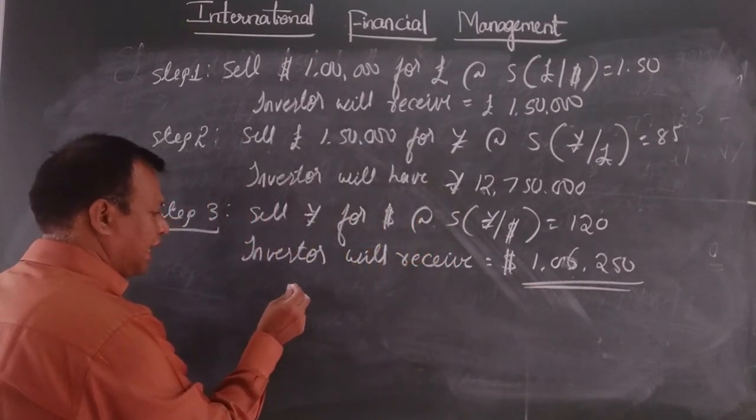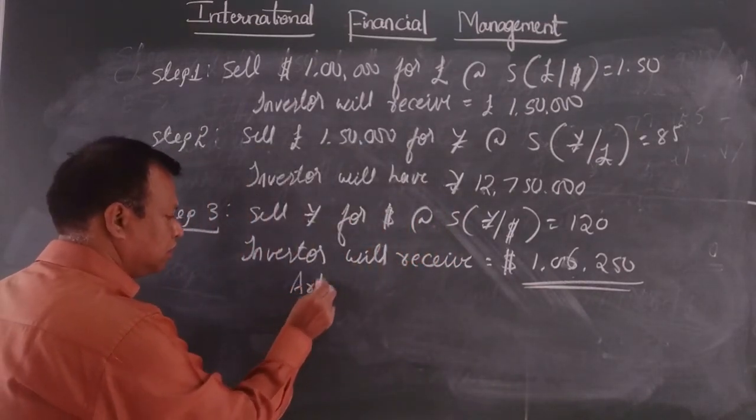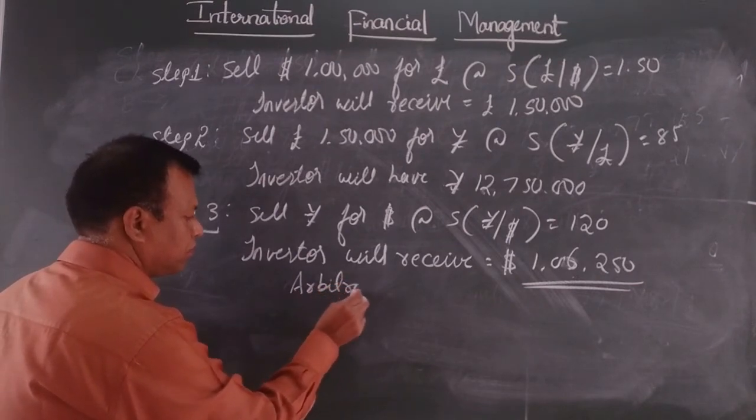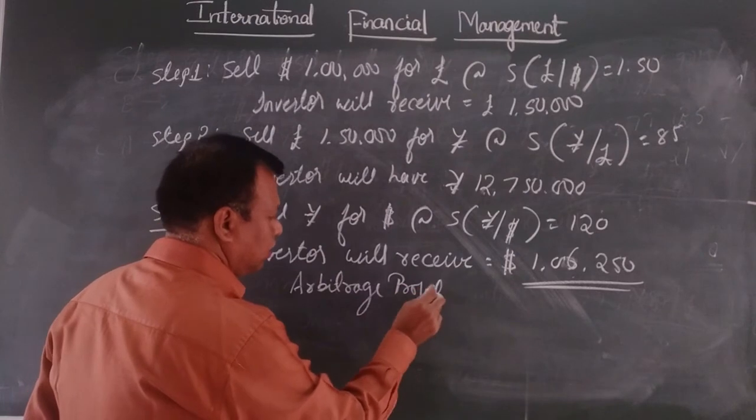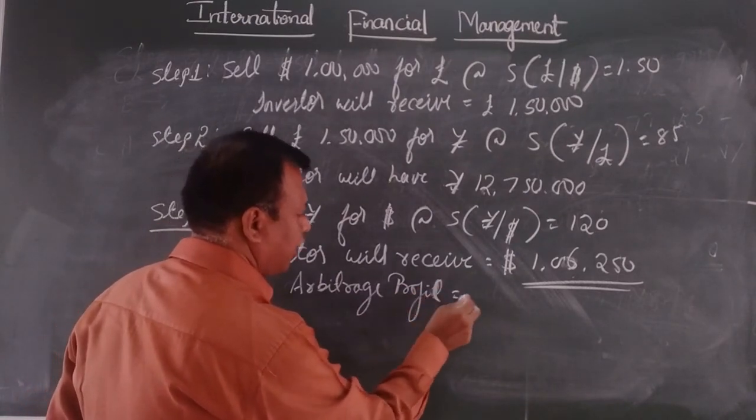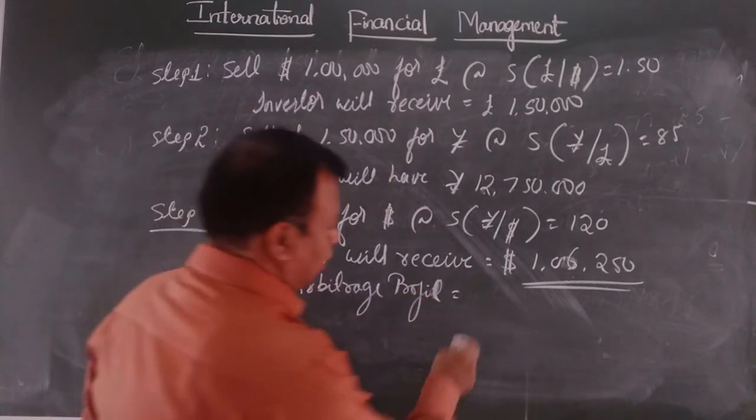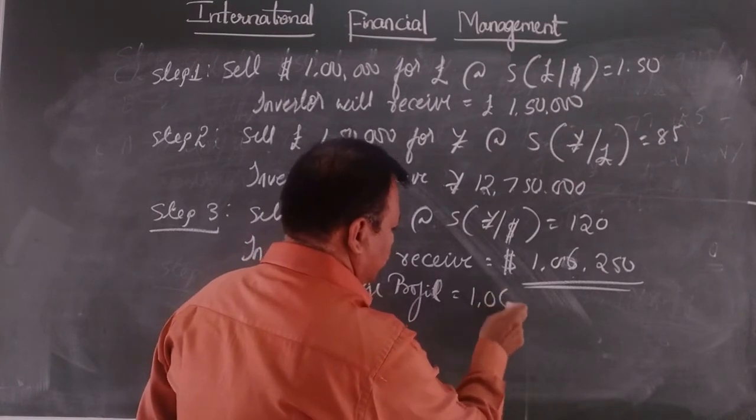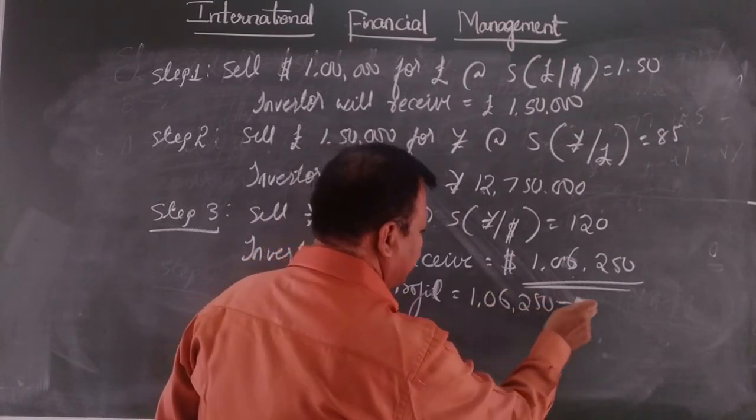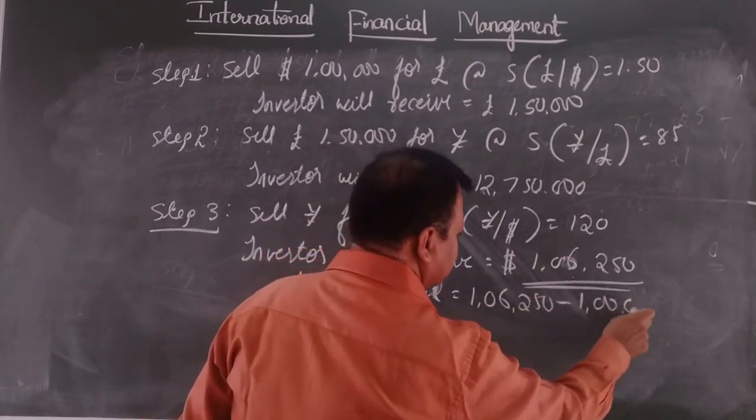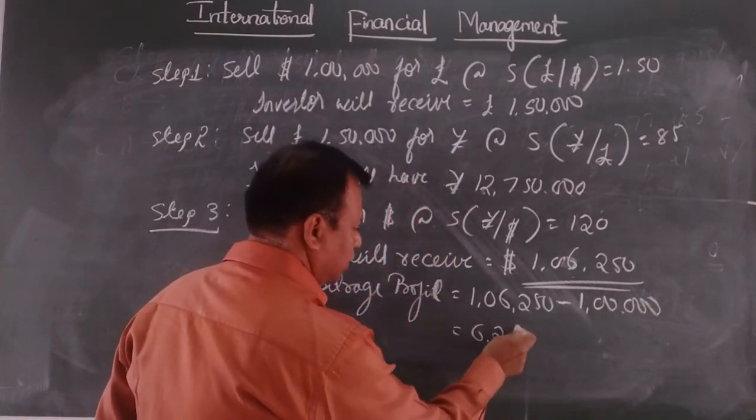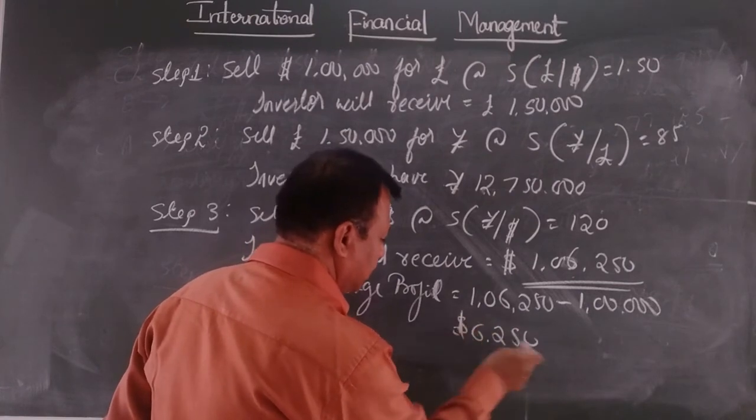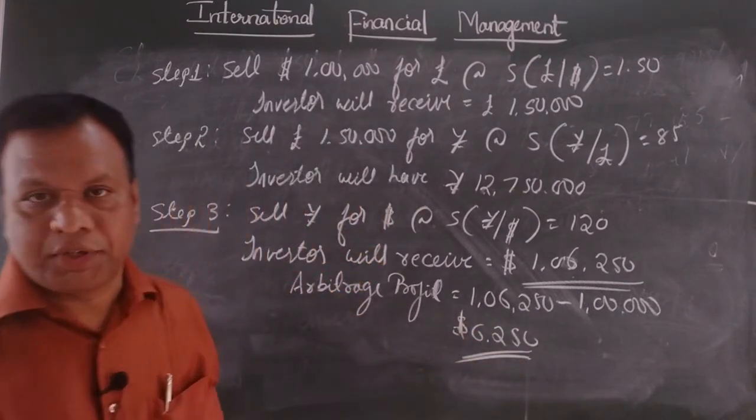So an investor will have an arbitrage profit of how much? An investor will have arbitrage profit of 1 lakh 6,250 minus initially how much he had? 1 lakh. So if we subtract these two things, we will get 6,250 dollars as arbitrage profit.